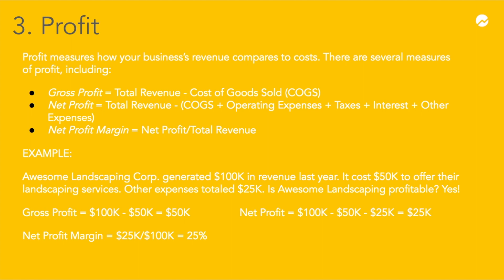Let's take an example using Awesome Landscaping Corporation. Let's say the business generated $100,000 in revenue last year. It cost $50,000 last year to offer their landscaping services, and other expenses for the year totaled $25,000. Is Awesome Landscaping profitable? Yes, it is. To calculate gross profit, we will simply take total revenue of $100,000 and subtract the cost of goods sold, $50,000, to get a $50,000 gross profit.